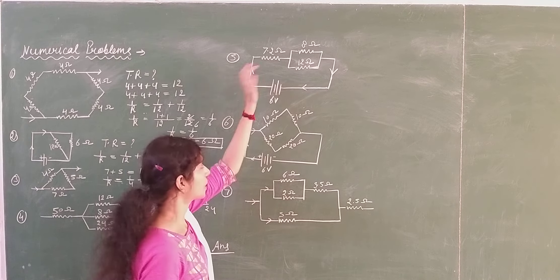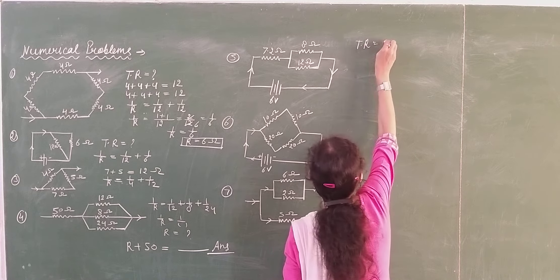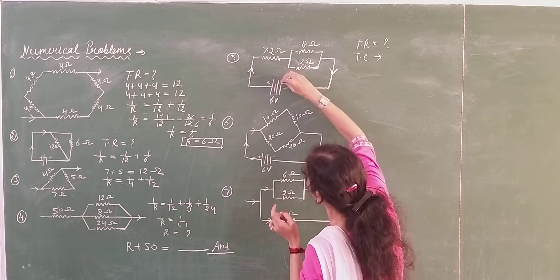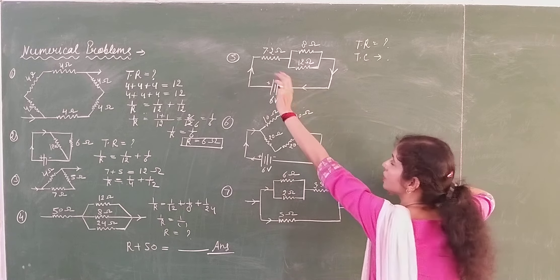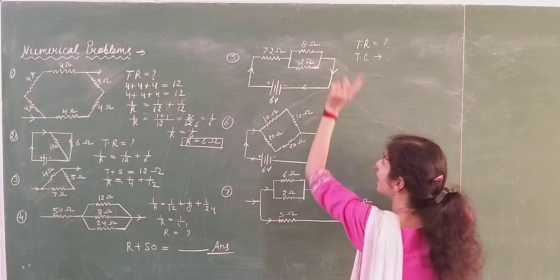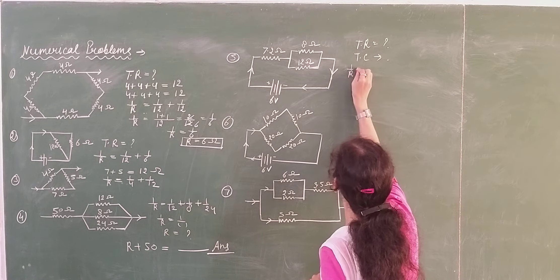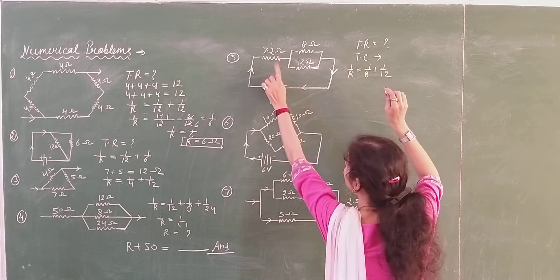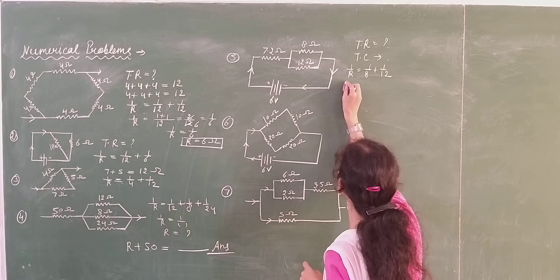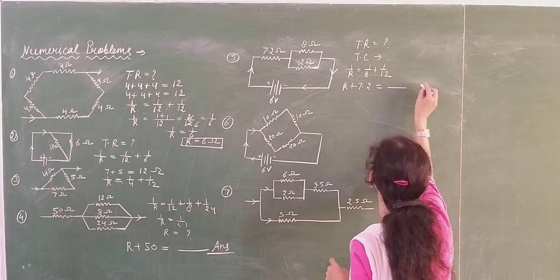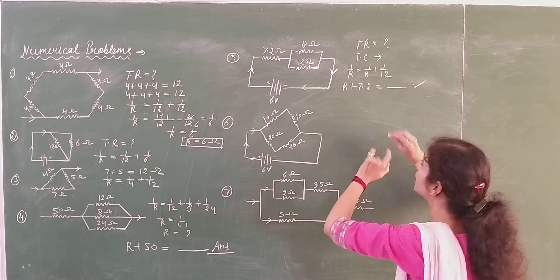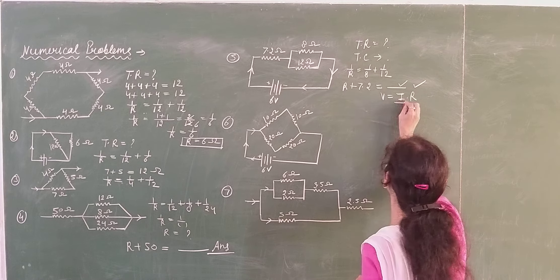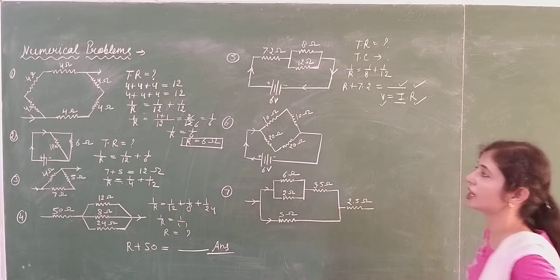Now in this question you have to find out both total resistance and total current. Current flows from the positive terminal and divides into 2 directions, so these 2 branches are parallel to each other. Use 1 over R equals 1 over 8 plus 1 over 12. Whatever resultant you get will be connected in series with 7.2 ohm, giving the total resistance. For the second part, since V is given and you have R, use V equals I times R to find the total current.